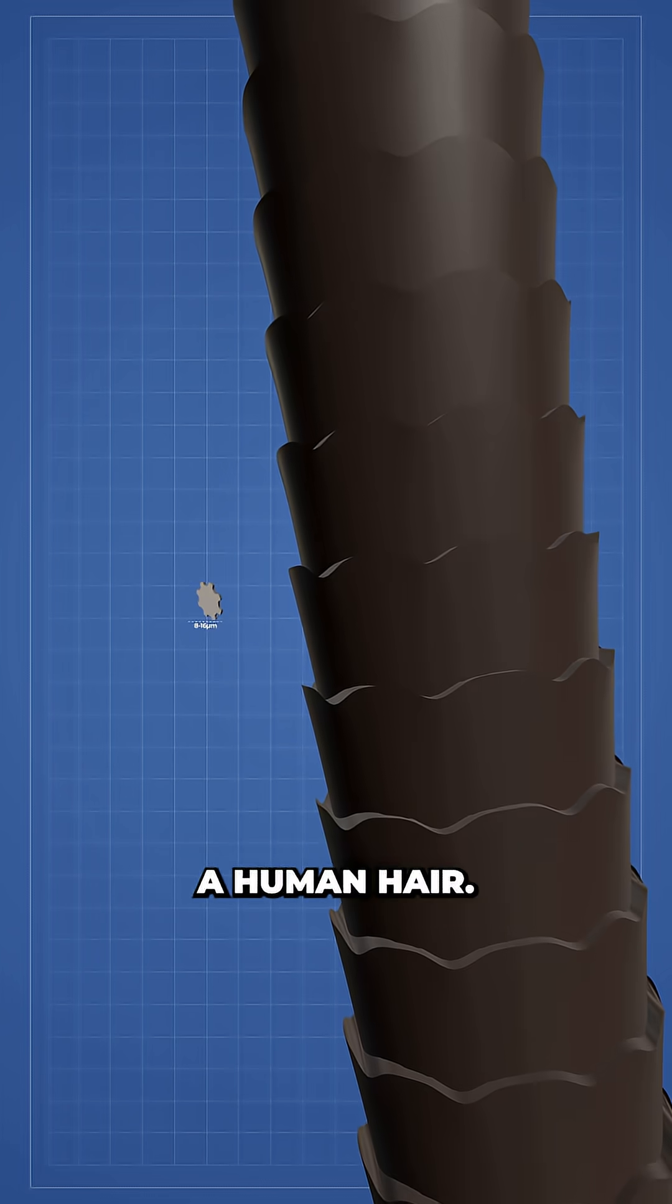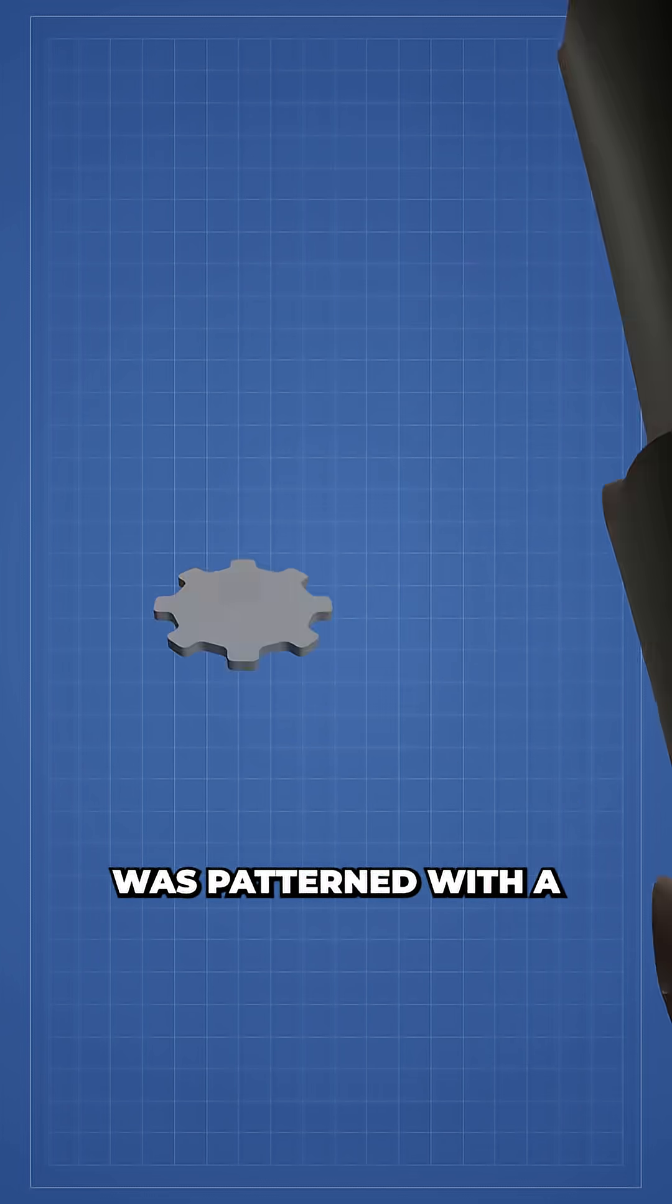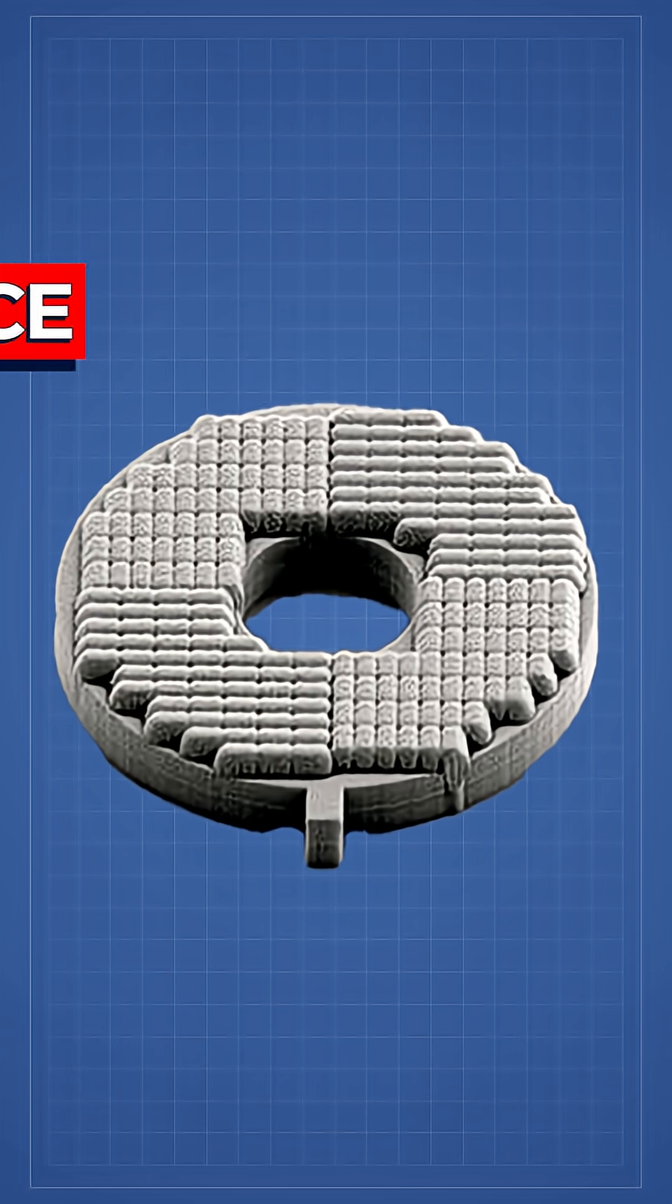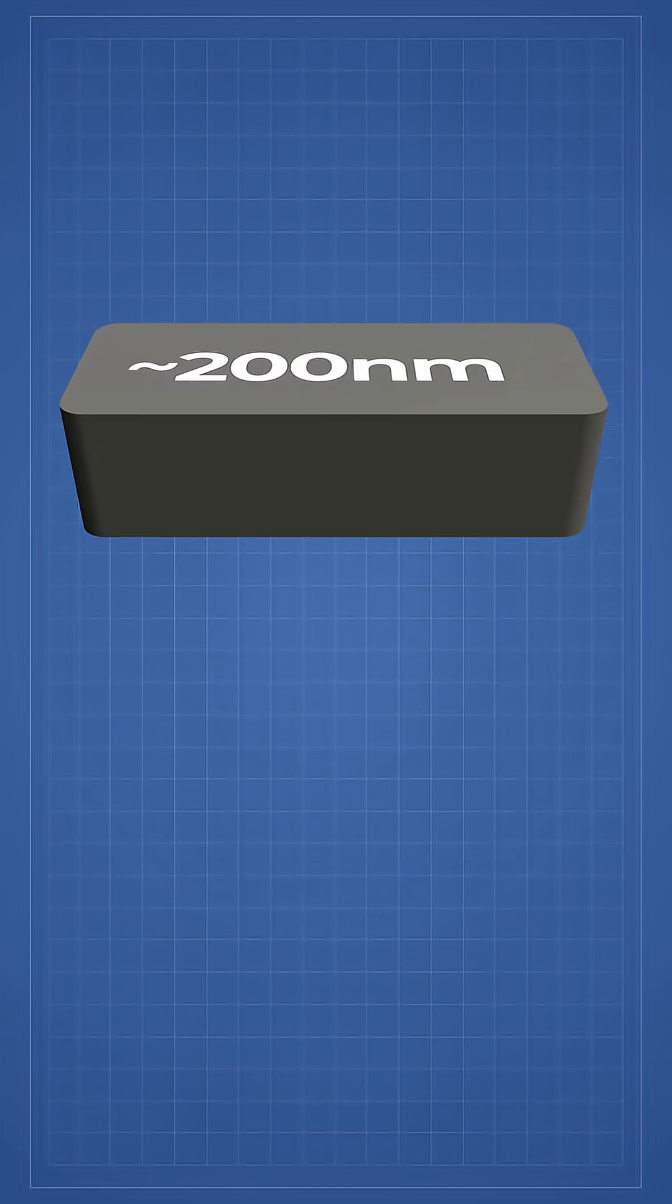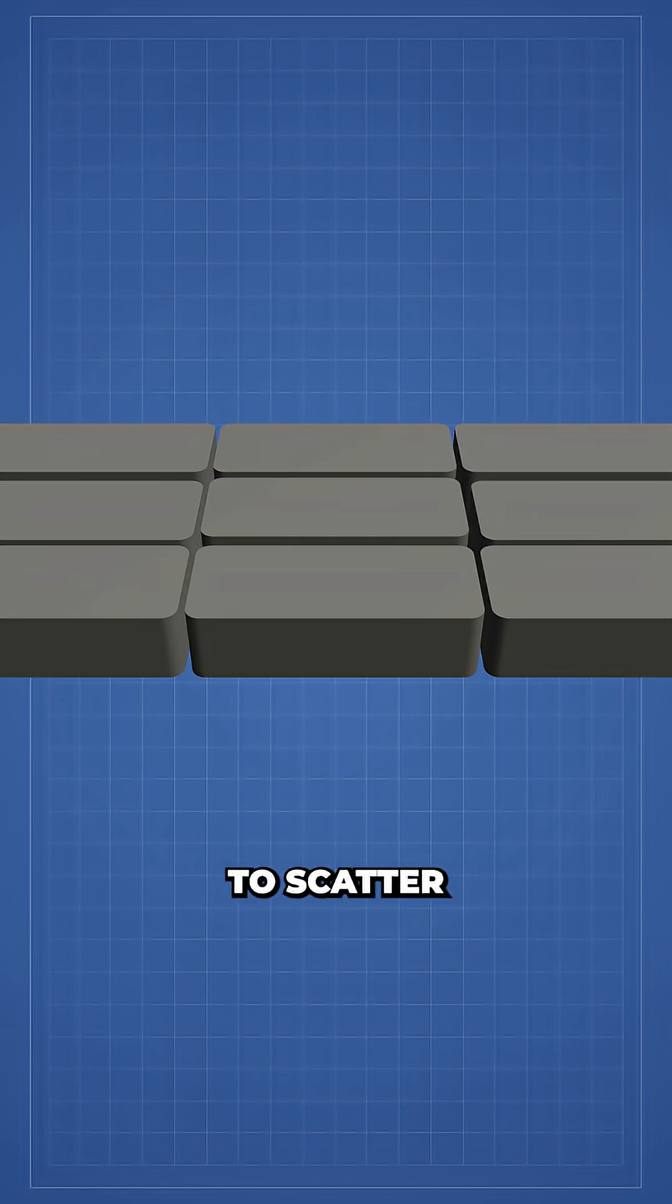Each gear was patterned with a metasurface, a carefully arranged field of asymmetric silicon nanoblocks, only a few hundred nanometers wide. These structures were engineered to scatter incoming light more strongly in one direction than the other.